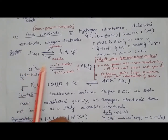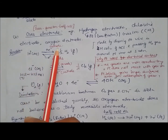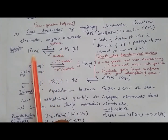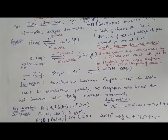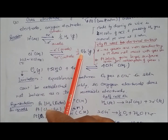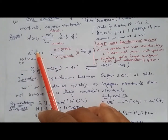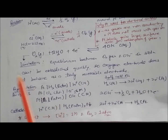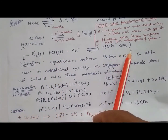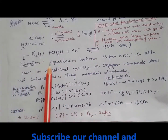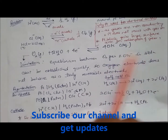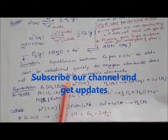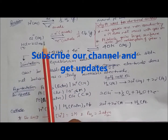For gas electrode reactions: at the cathode, H⁺ ions gain electrons and convert to hydrogen gas (reduction), while at the anode, H₂ oxidizes to give H⁺. For chlorine: at the anode, Cl⁻ becomes Cl₂, and at the cathode Cl₂ becomes Cl⁻, using KCl aqueous solution. For oxygen, reduction gives 4OH⁻ in aqueous solution. However, the equilibrium between oxygen gas and OH⁻ cannot be established quickly because oxygen electrode does not behave as a truly reversible electrode.